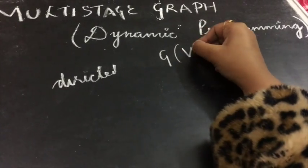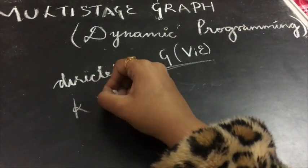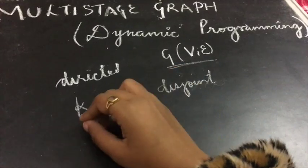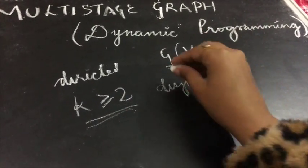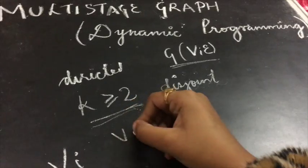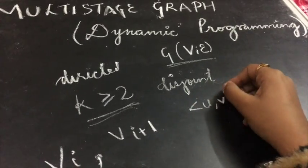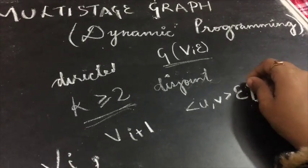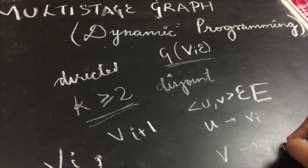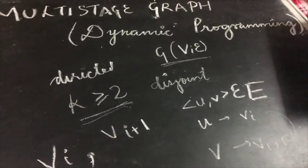A multistage graph is a directed graph G with vertices V and edges E, where the vertices are partitioned into K disjoint sets — that is, they do not share vertices. The vertices will be partitioned into at least two or more sets, labeled V_i and V_{i+1}. If I have an edge (u, v) belonging to edge set E, then u will be in V_i and v will be in V_{i+1}, the next stage.